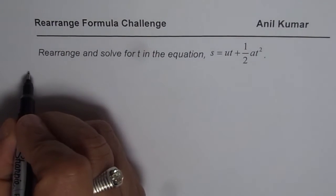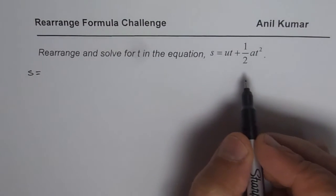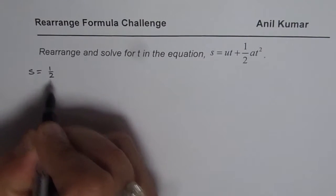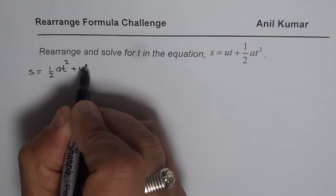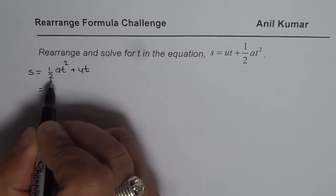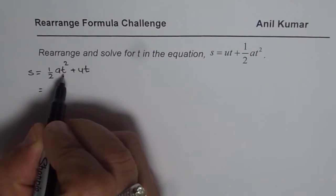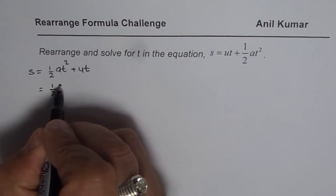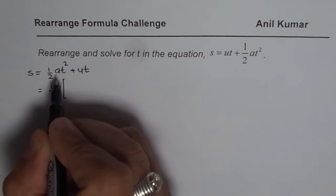This method is also used as completing the squares method to write a quadratic equation vertex form. We will first rearrange this equation, write it as half of a t square plus ut. Now we will isolate, or rather we will take half common. We are not taking t common at all. So half of a we will take common. Whatever is the coefficient of t square is being taken common here at this stage.